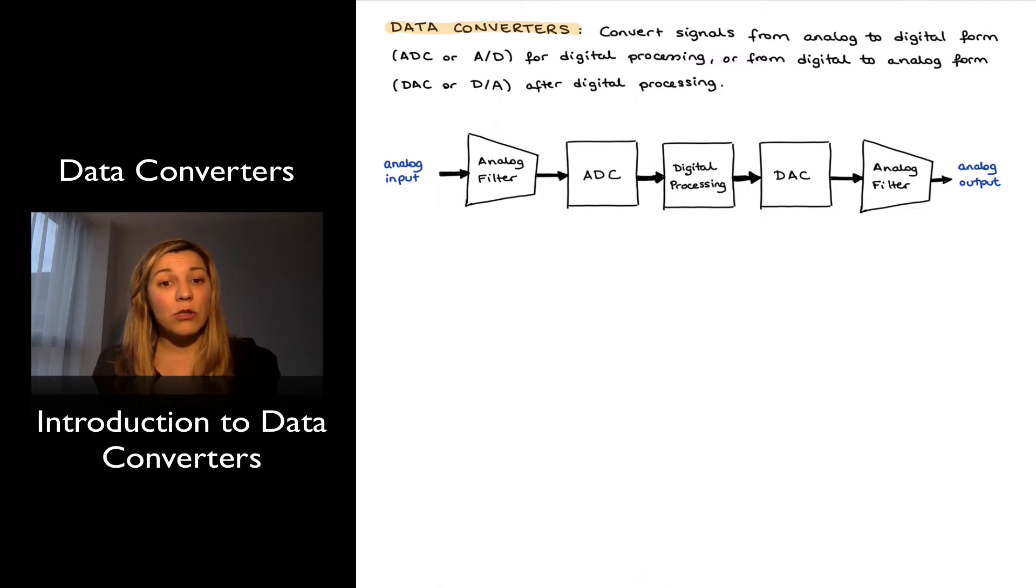Most signals in the physical world are analog quantities. Their values are continuous both in time and in amplitude, but sometimes it is required to convert these signals into their digital form, typically for them to be either processed, stored, or transmitted using a digital system.